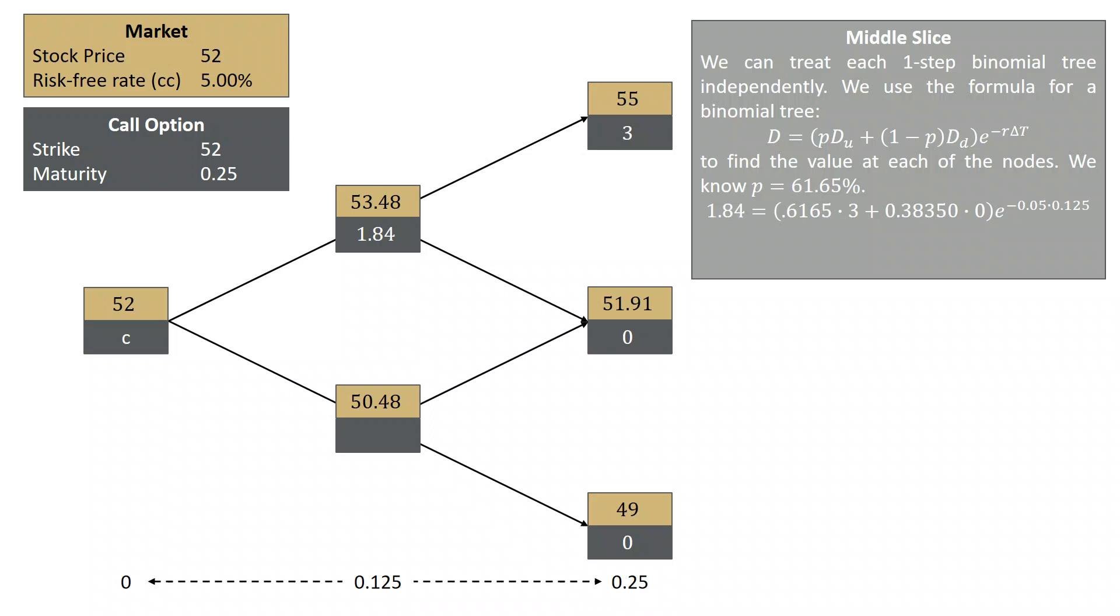The value of the option at the node where the stock is 50.48 is, of course, 0 because every node to the right of that, the option is worth 0.